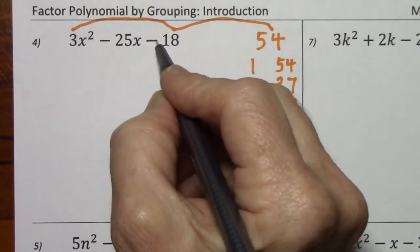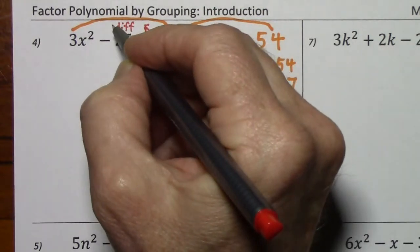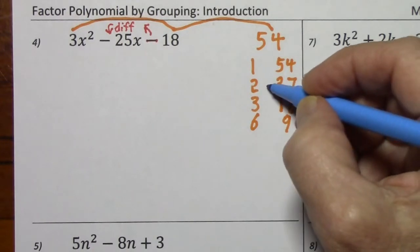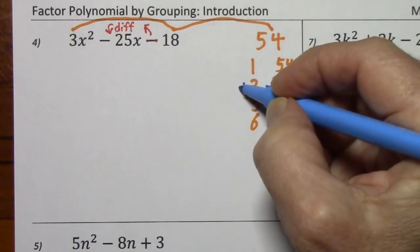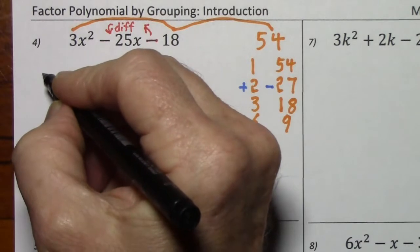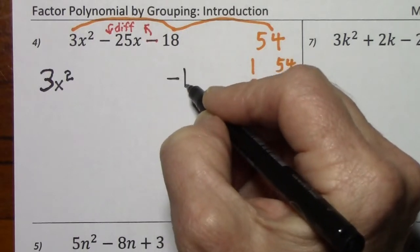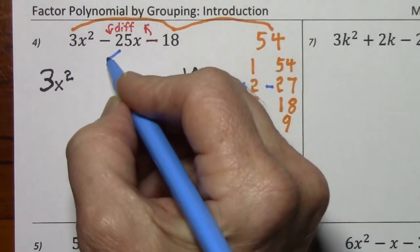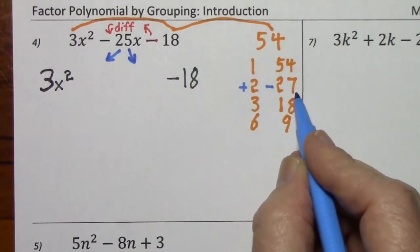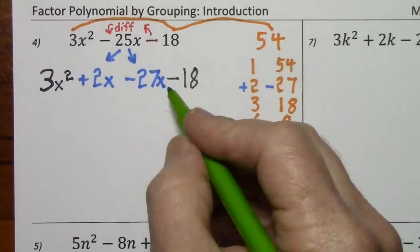Noting that the last term is negative, so we want a difference of negative 25. Looking at our factor pairs, if we had negative 27 and positive 2, that would give us a negative 25. We keep the first term, keep the last term, and rewrite our middle term as positive 2x and negative 27x.